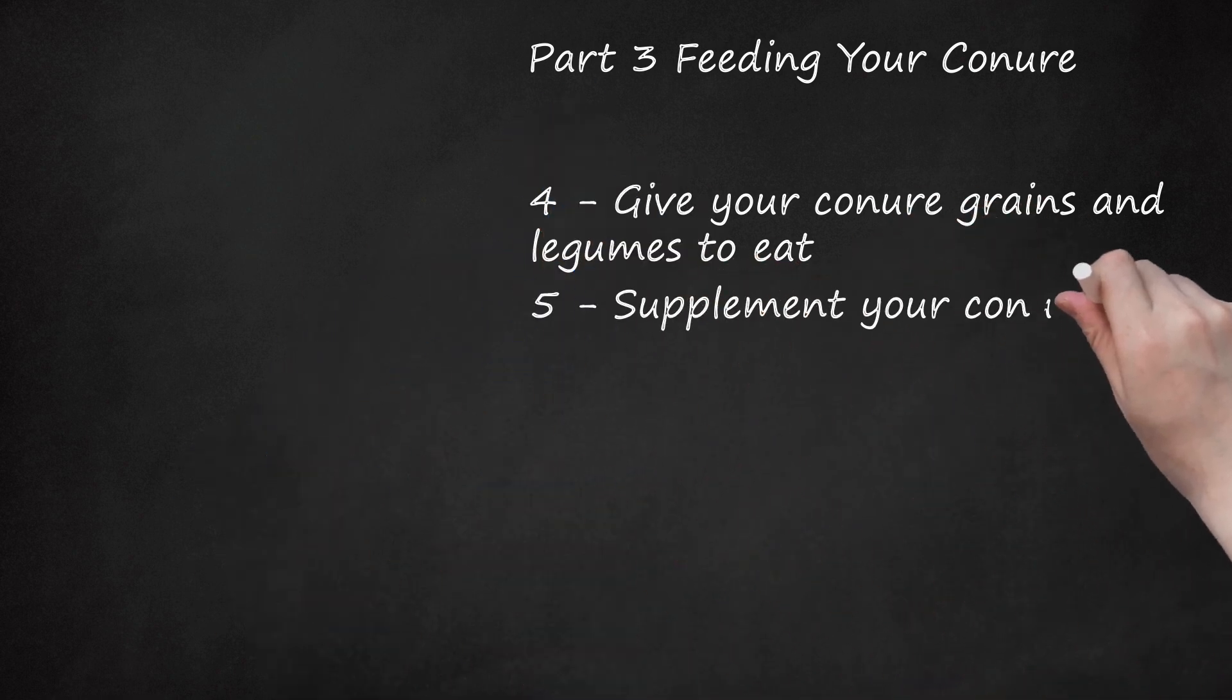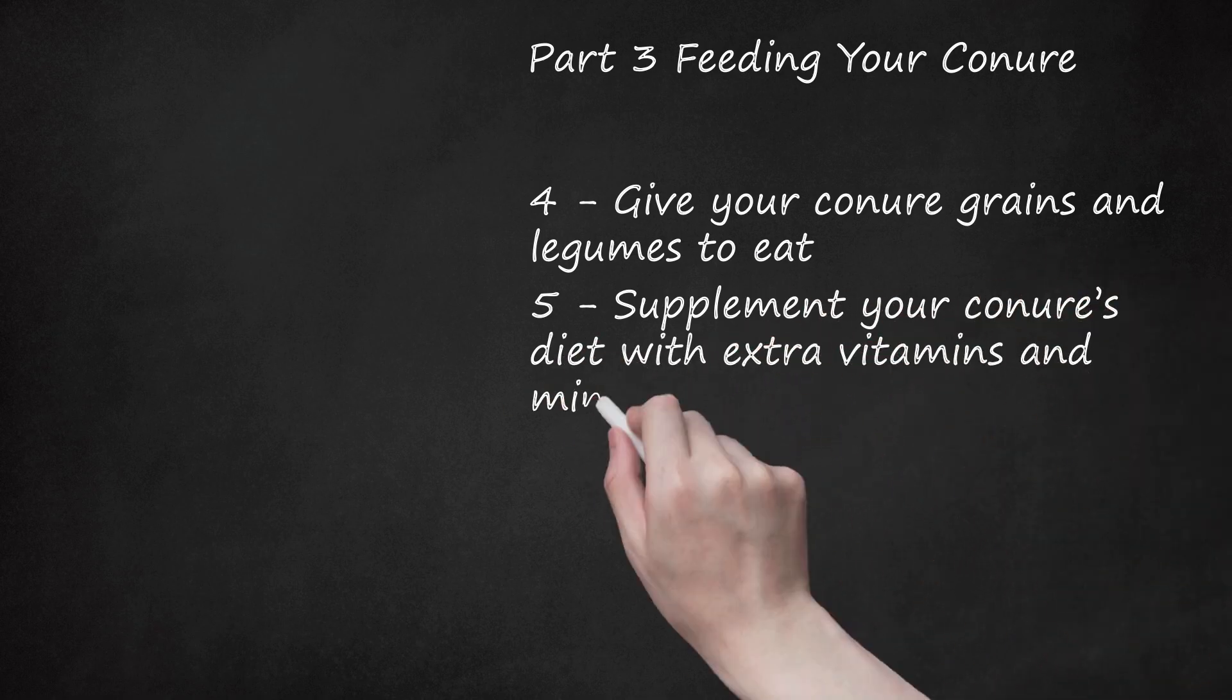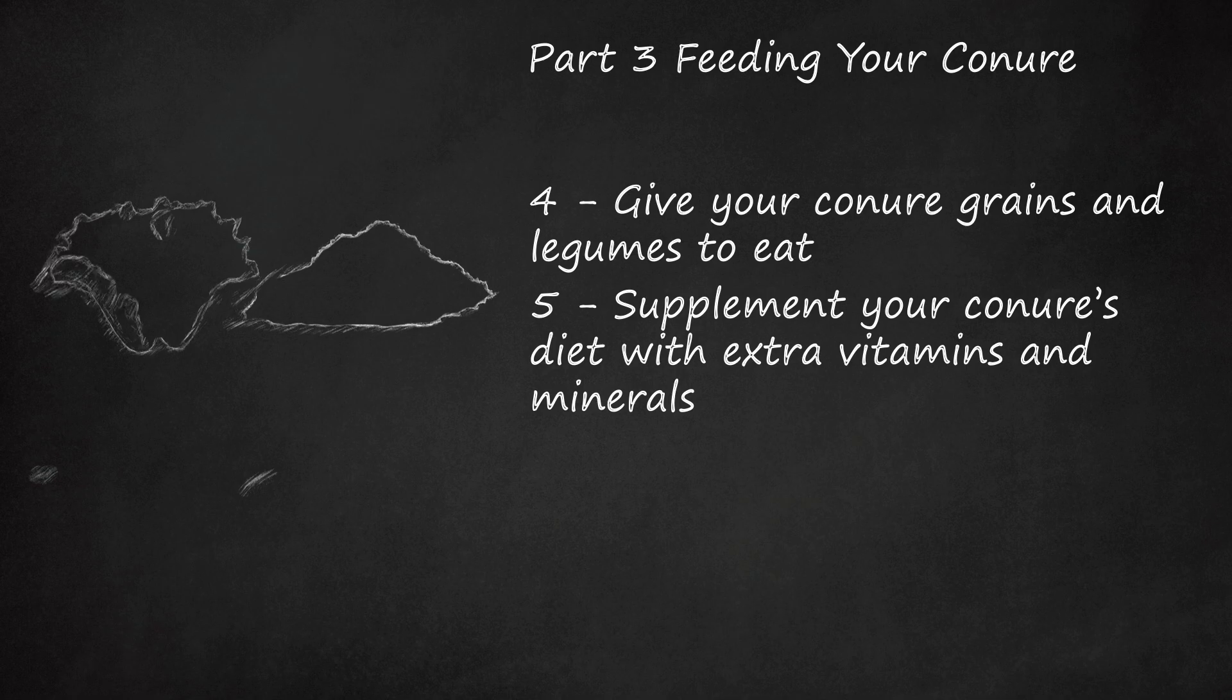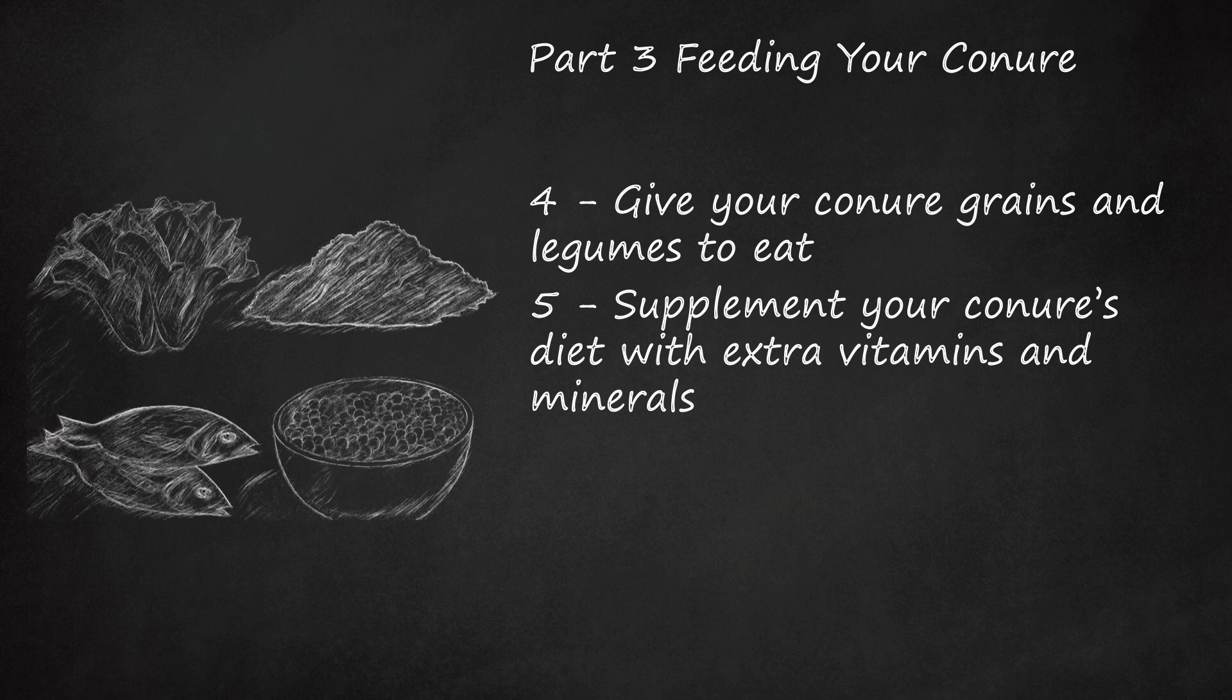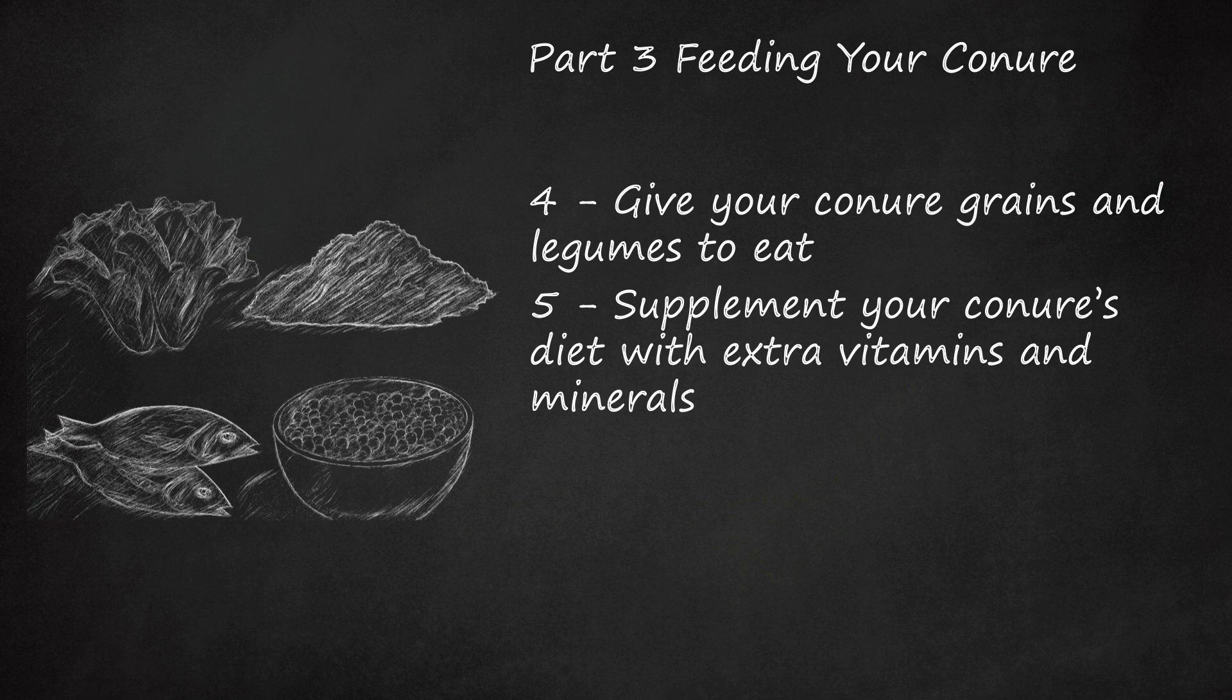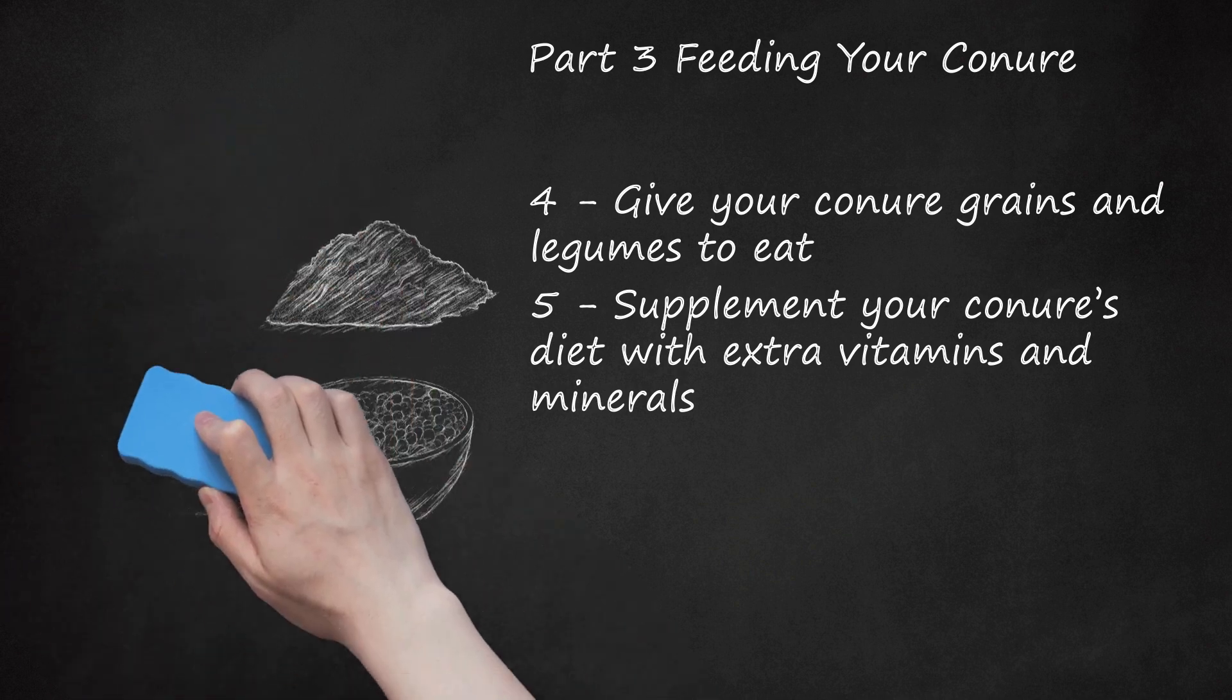Supplement your conure's diet with extra vitamins and minerals. You may need to supplement your conure's diet with certain nutrients, including calcium and vitamin K. Incorporate foods into his diet, like dark leafy greens, soy oil, and fish meal, that are high in these nutrients. Adequate amounts of calcium and vitamin K are important to prevent a condition called conure bleeding syndrome. Calcium purges are available that your conure can chew on to get extra calcium in his diet. Cuttlebone is another calcium source, but is not recommended for conures. Water-soluble vitamins can be added to your conure's water. Speak with your veterinarian before supplementing your conure's diet.